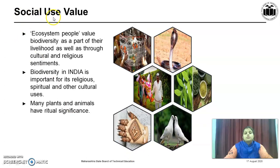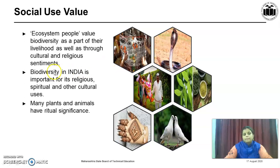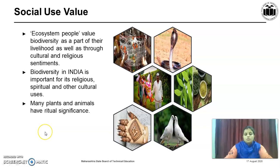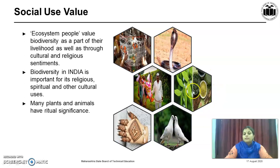The next type of value is Social Use Value. Ecosystem people value biodiversity as part of their livelihood as well as through cultural and religious sentiment. Biodiversity in India is important for its religious, spiritual and other cultural uses. Many plants and animals are worshipped as gods in Indian culture. You can see from these figures that plants and animals are worshipped, and they have many medicinal values and many other values.